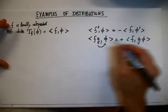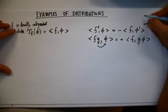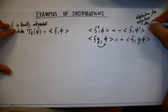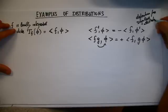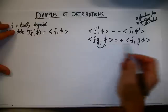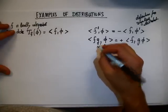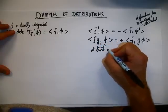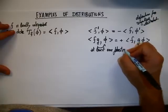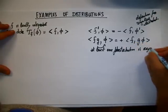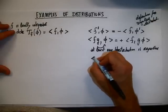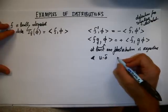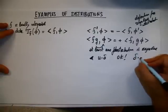This definition becomes a definition for any distribution. And regarding this product, it is also valid as long as at least one of the distributions is regular. So I can do, for example, u times delta — this is okay. But if I try to do delta times delta, this is not okay.